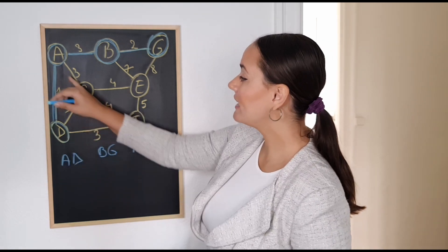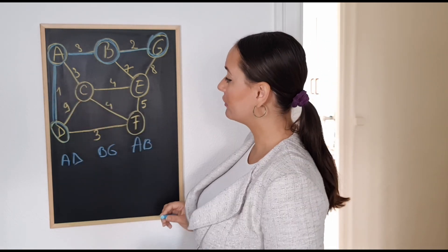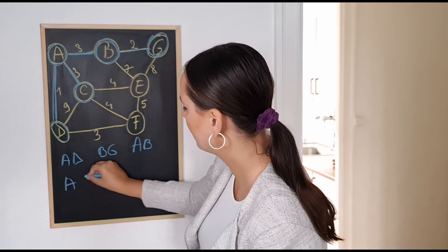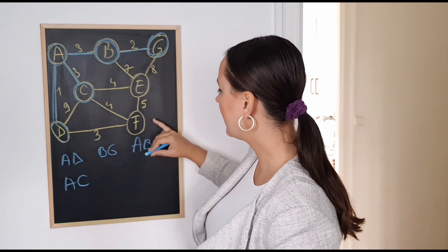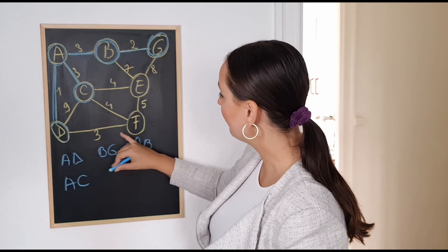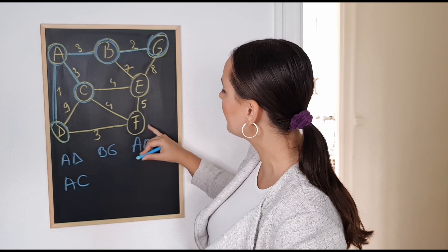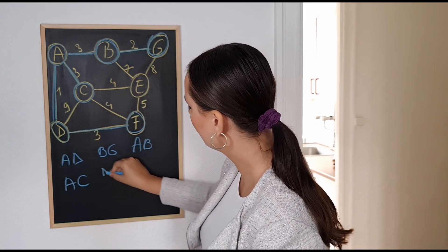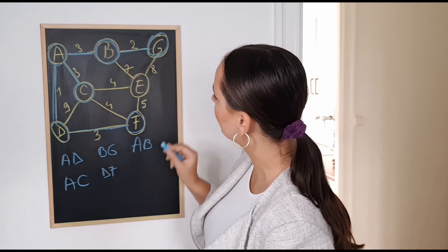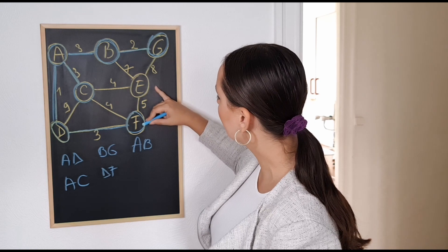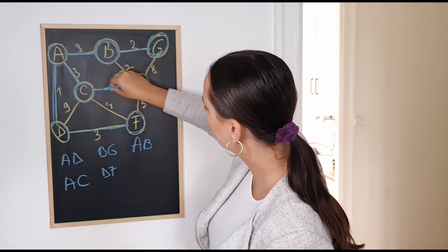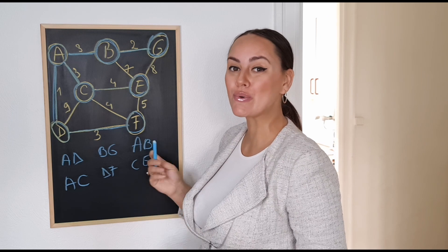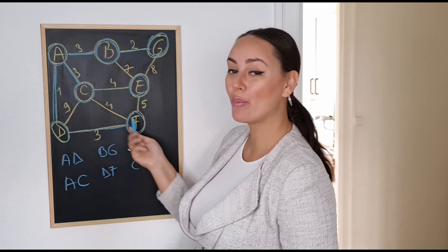Now we can either choose DF or AC, making sure we do not create any cycles. Let me choose AC. In order to visit E and F, we can take a look at DF because it has an edge weight of 3, and this way we would visit F. So let's do DF with edge weight of 3 — we do not have any cycles. Now all we need to do is connect the remaining vertex, so let's do CE. We have performed Kruskal's algorithm on an undirected edge-weighted graph with no cycles.